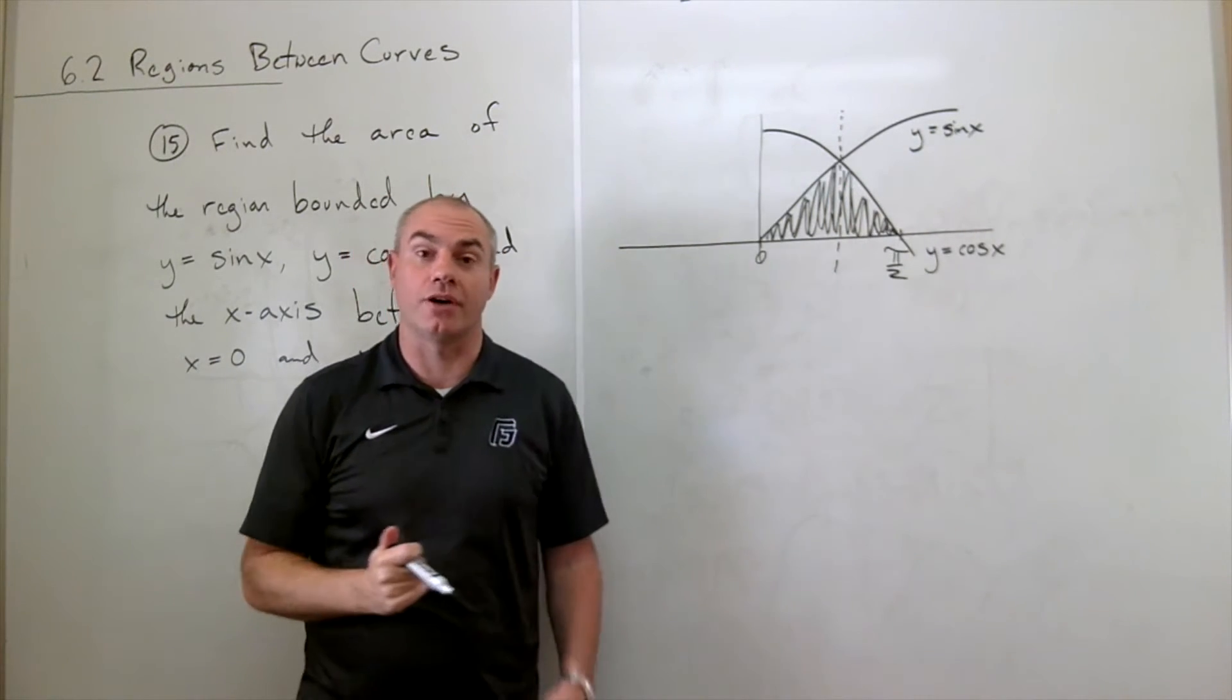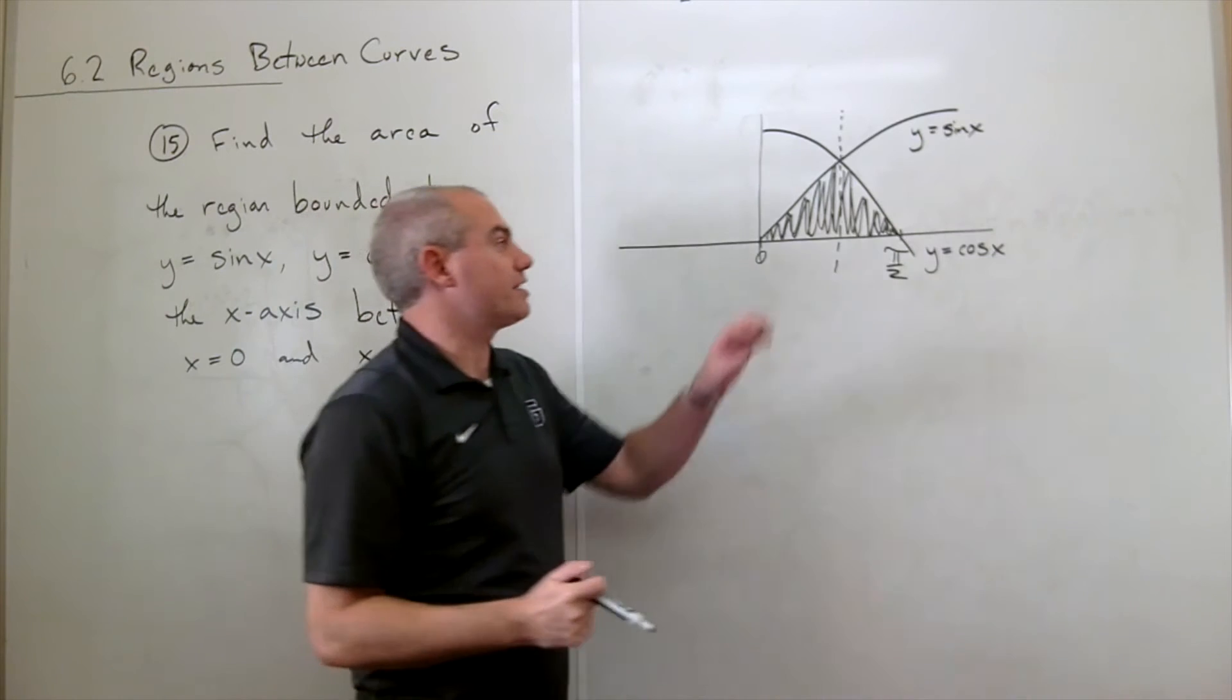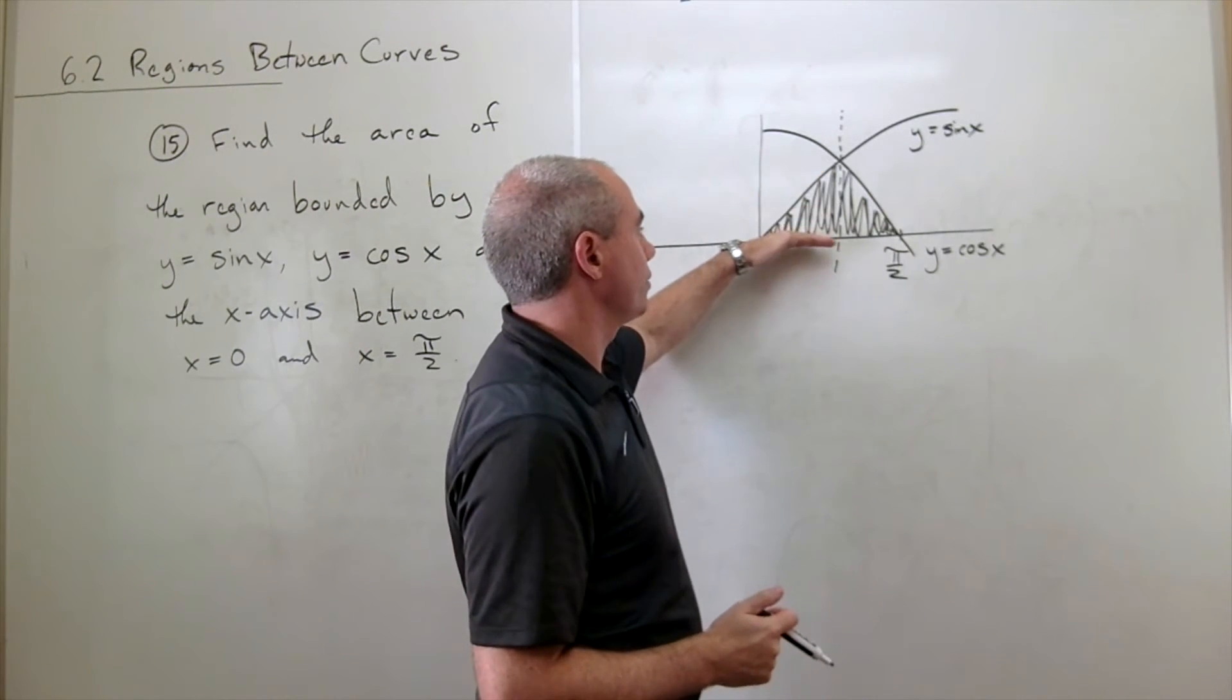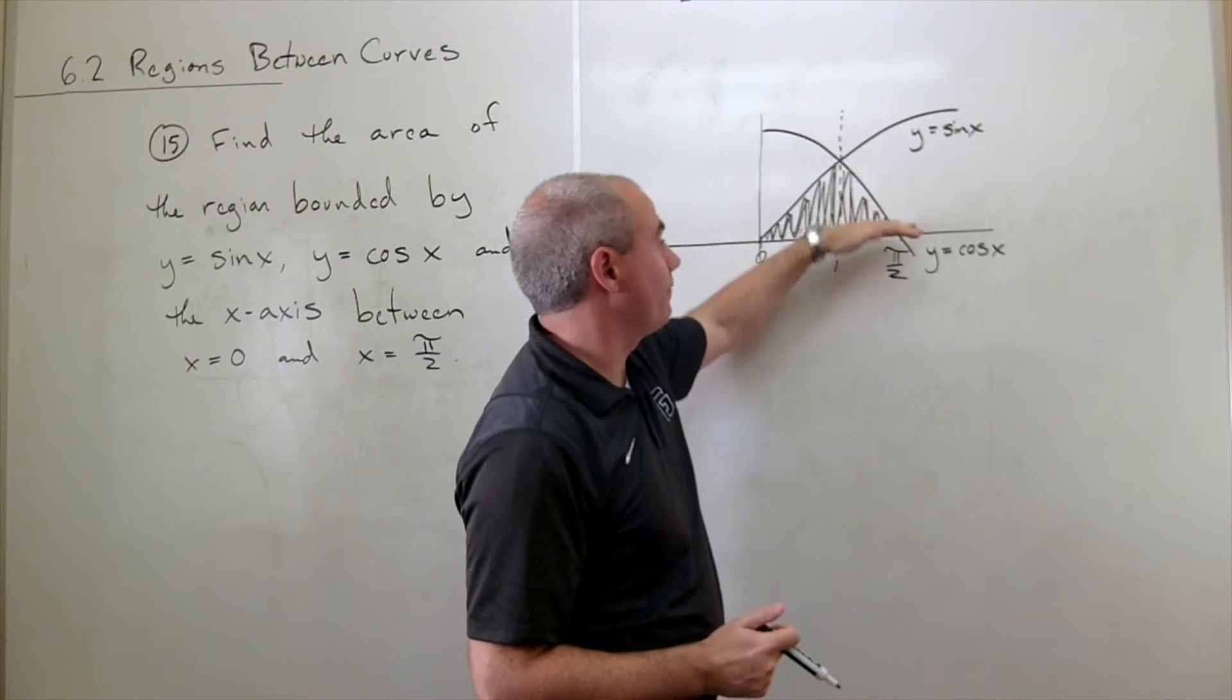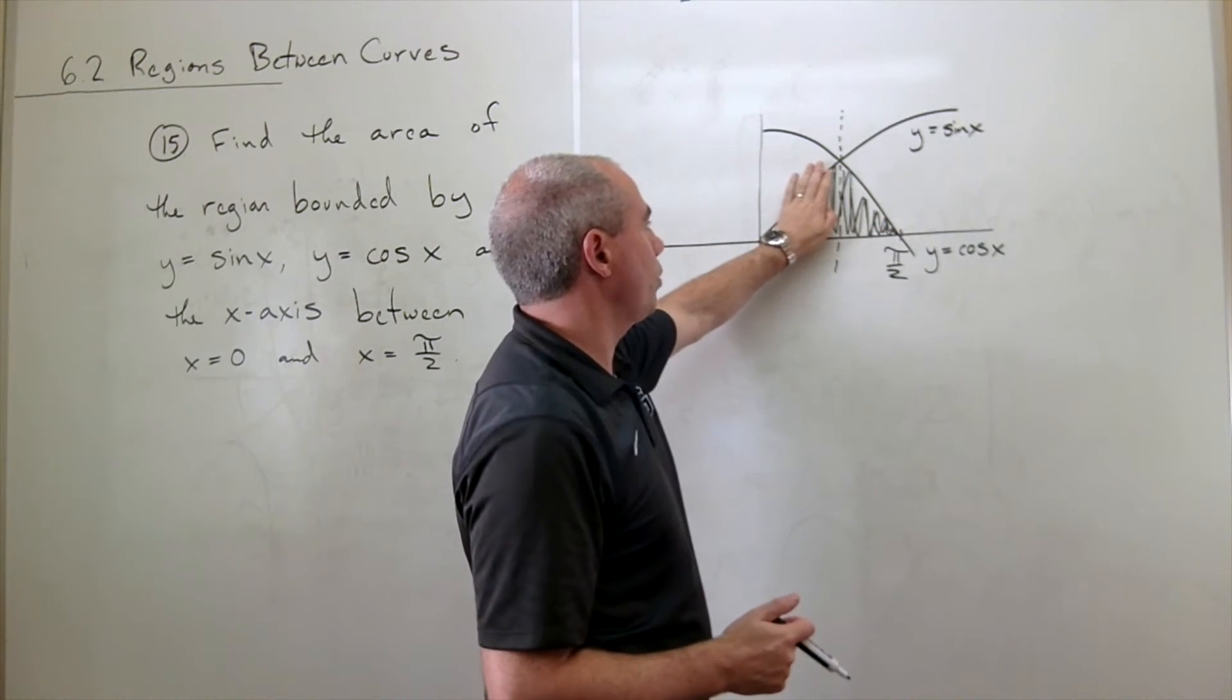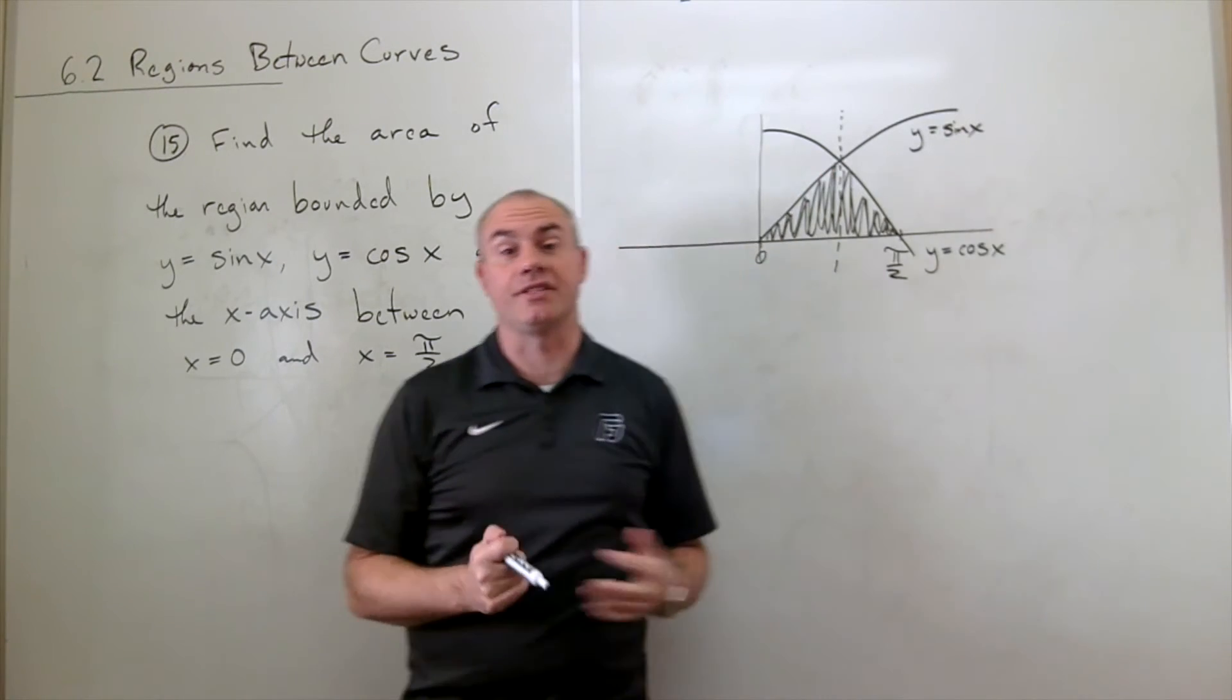And we can use that to our advantage in this problem, is instead of trying to break this up and saying, okay, I've got a top function, bottom function, then a different top function, bottom function, I can just say, well, let's just look at one half of this thing and then double the area.